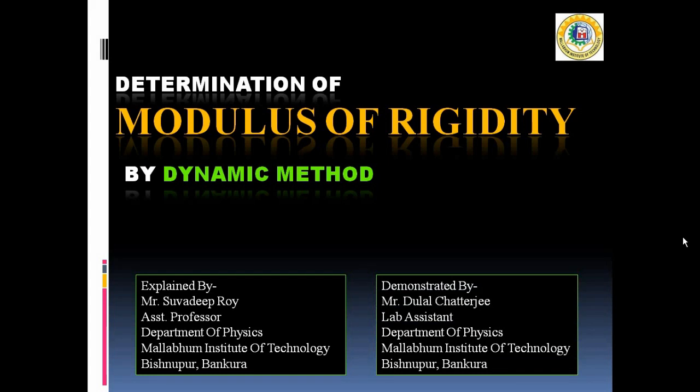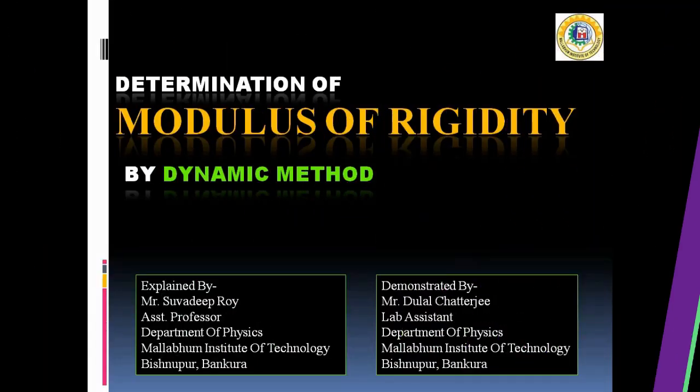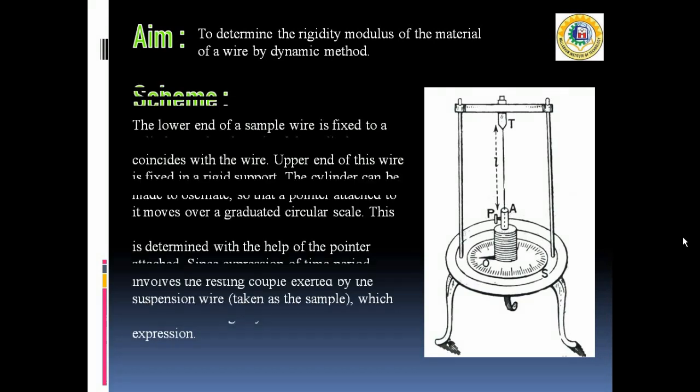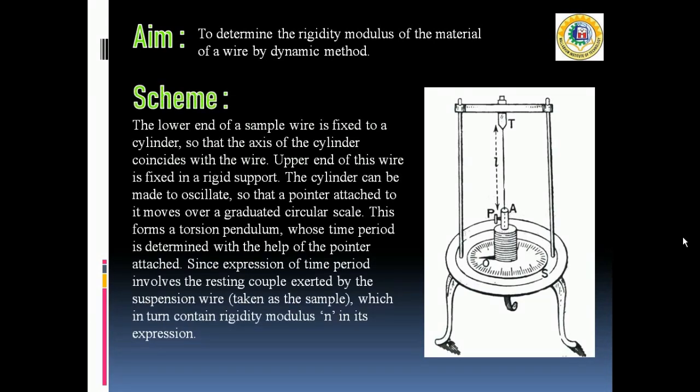Let us start. Aim of our experiment: The aim is to determine the rigidity modulus of the material of a wire by dynamic method. The scheme of this experiment is that a cylinder is suspended using the wire of which the rigidity modulus is to be calculated. The upper end of this wire is fixed in a rigid support.